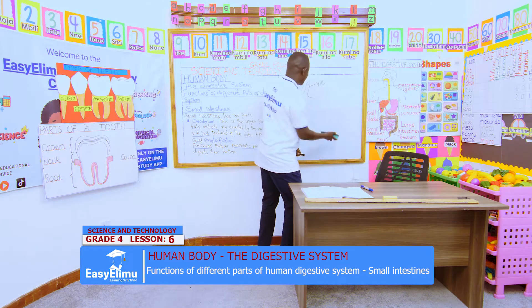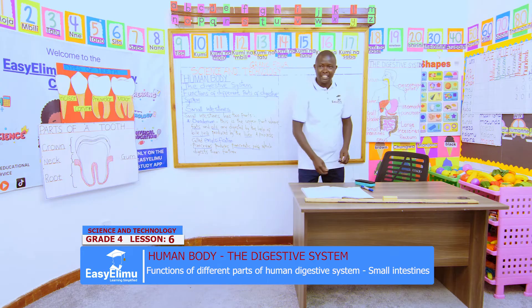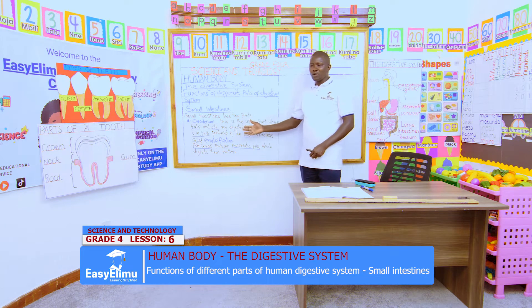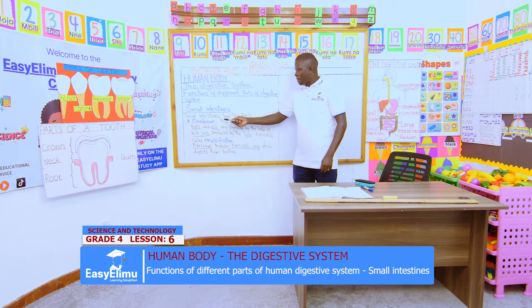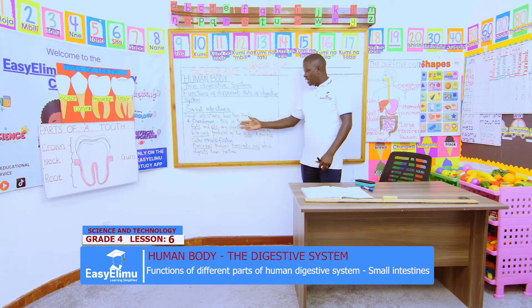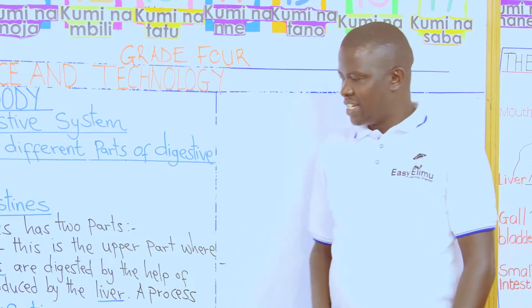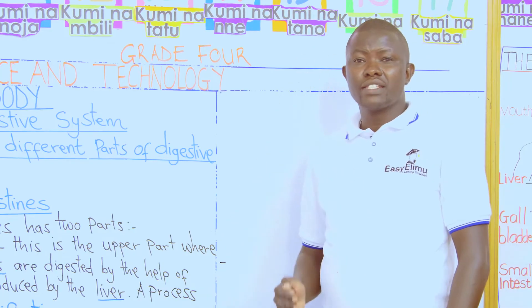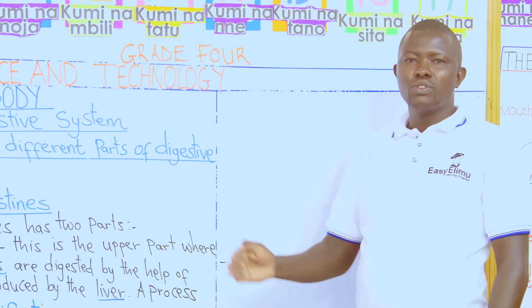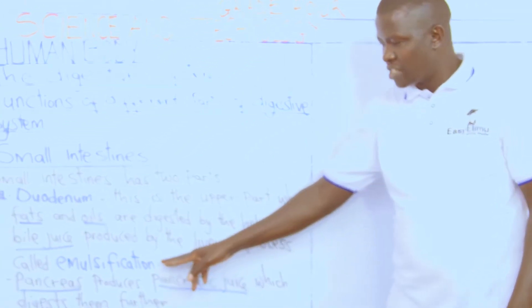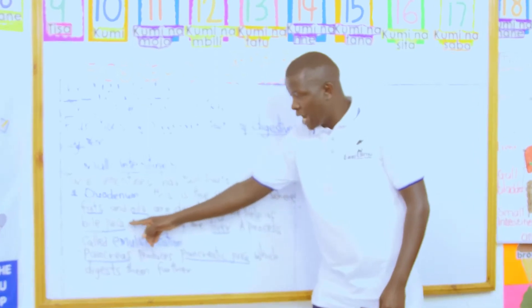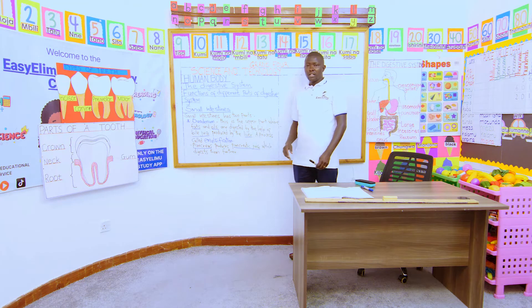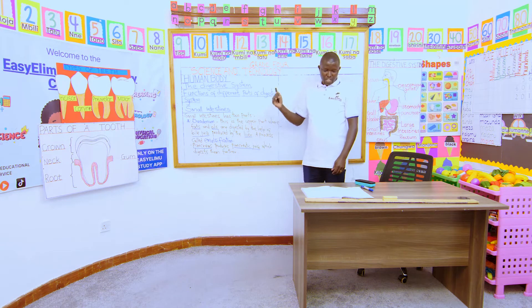Are we together class? Now in groups: what is the function of the small intestine? How is the small intestine structured so that it can accommodate the digestion of food? We have said it has a part called the duodenum — the upper part — where fats and oils are digested. The process of breaking down fats and oils is called emulsification. It is broken down by the bile juice produced by the liver, and then the pancreas produces the pancreatic juice which digests them further.